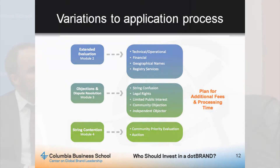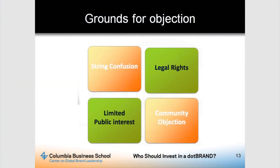There is a process whereby there are some appeals around intellectual property where people could object. Where multiple parties have applied for the same string, and each may have a legitimate intellectual property claim — we're not talking about squatting. There may also be a community where multiple people are applying to represent the same community. There might also be issues where it looks like a very similar string to another string — for example, .com versus .com — where confusion could arise. The Government Advisory Committee of ICANN could also raise public interest concerns about particular applications.